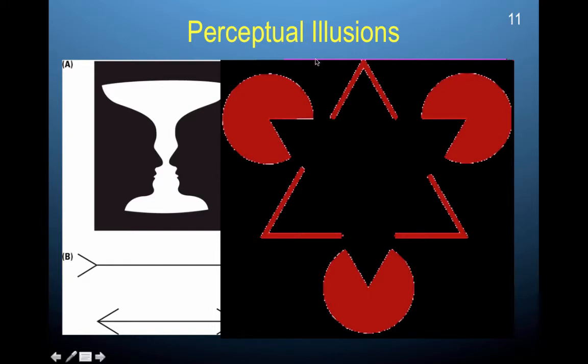So here, when we look at this, we tend to assign meaning. That here we have a triangle that might be in front of these three circles. And by being in front of it, it's blocking the rest of these circles. So we might interpret that there is actually still a full circle behind this.